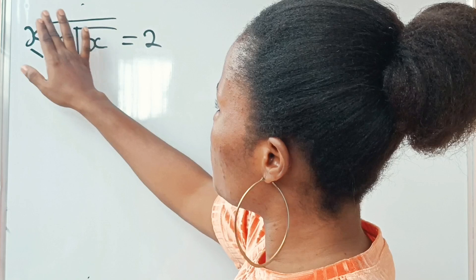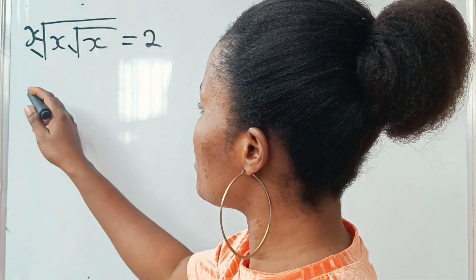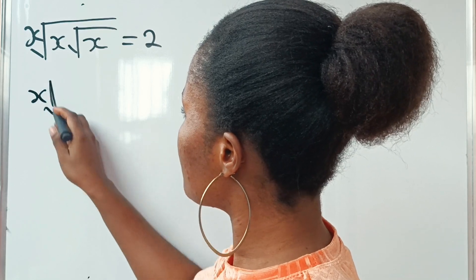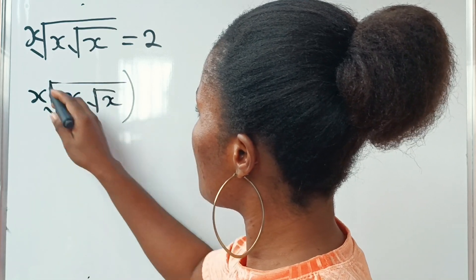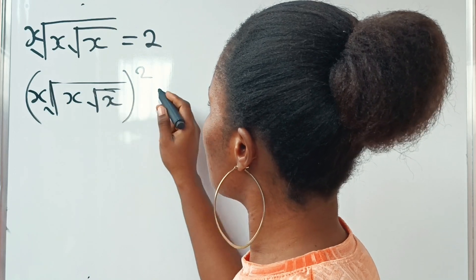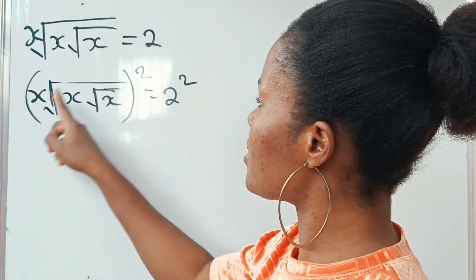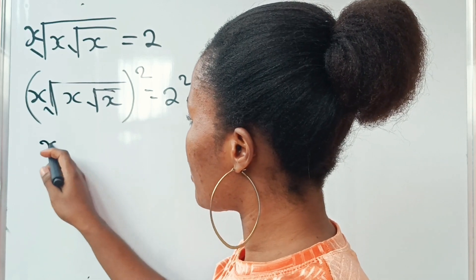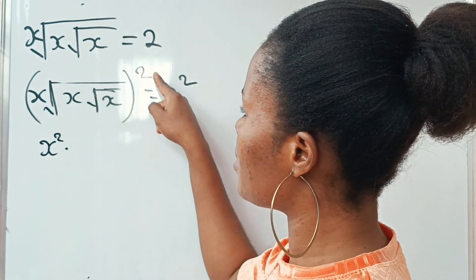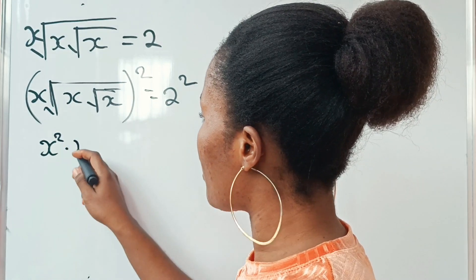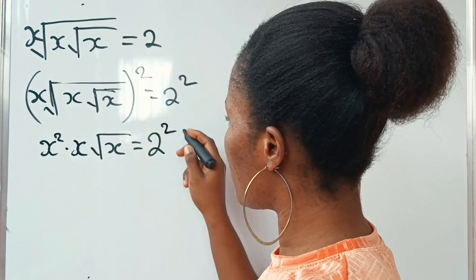First, to remove the square root, let's square both sides of the equation. So if we do that, we have x times the square root of x, everything squared, is equal to 2 squared. Now, x squared will give us x squared multiplied by the root, so we have x, then we have root x remaining, is equal to 2 squared.